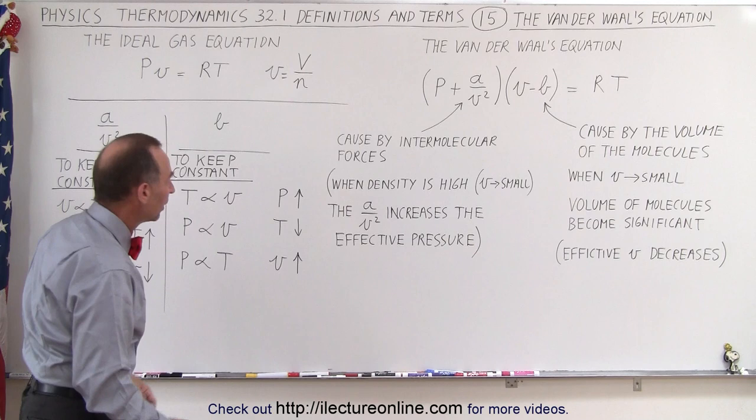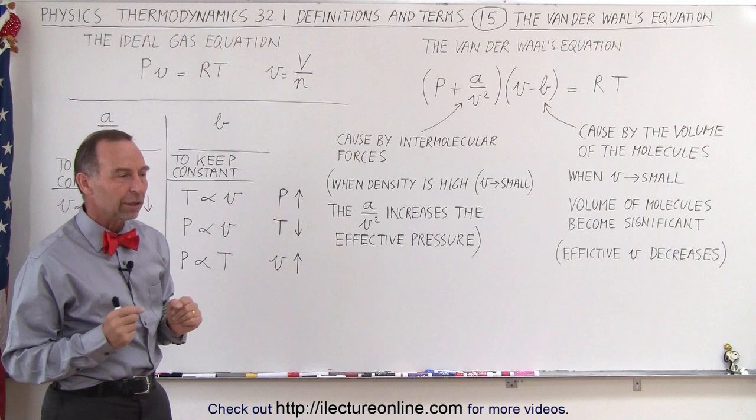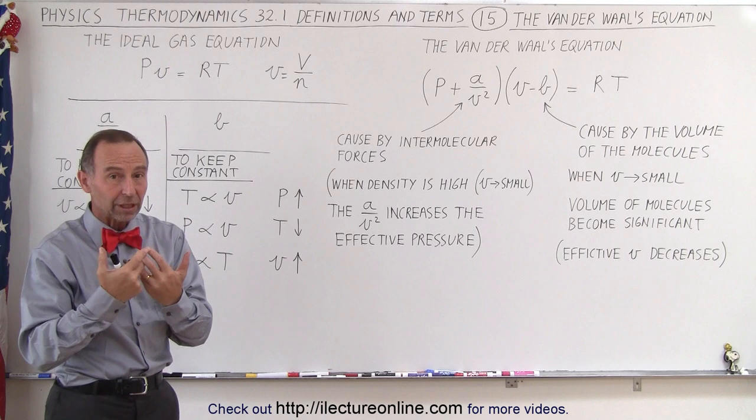We use the small v to mean the volume per number of moles. But if the pressures are very high, the temperature is very high, and the volume is very small, then the gas molecules in the gas do begin to interact with one another electrically.